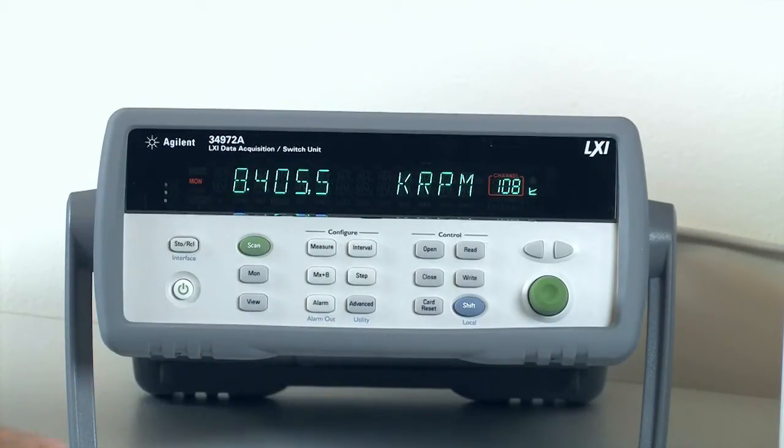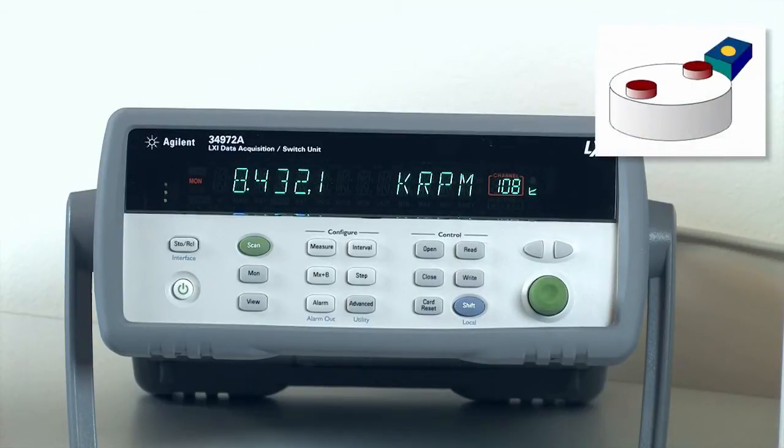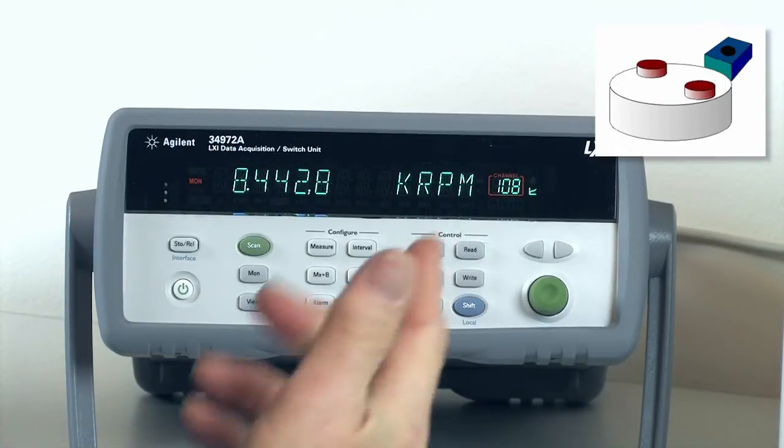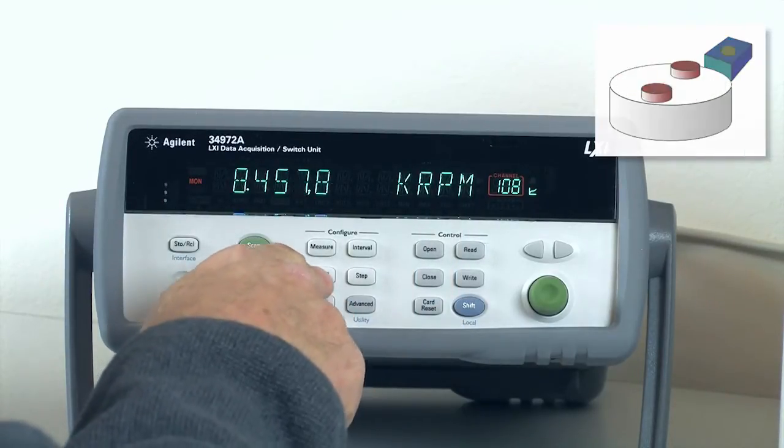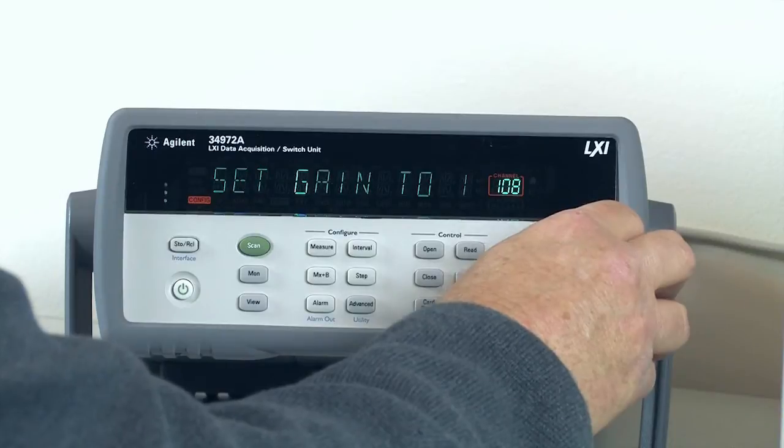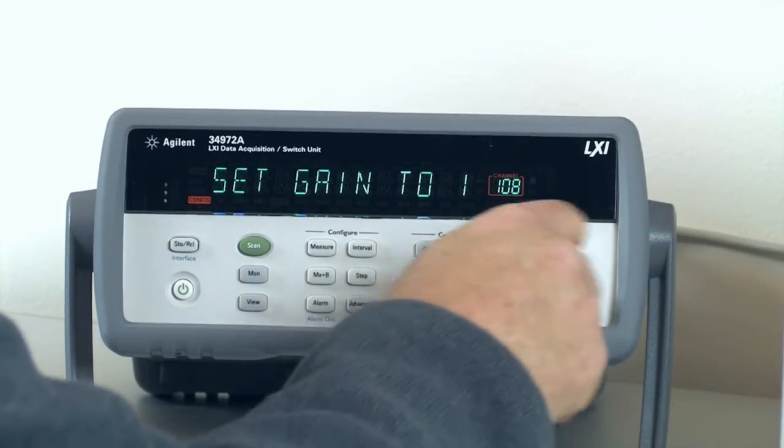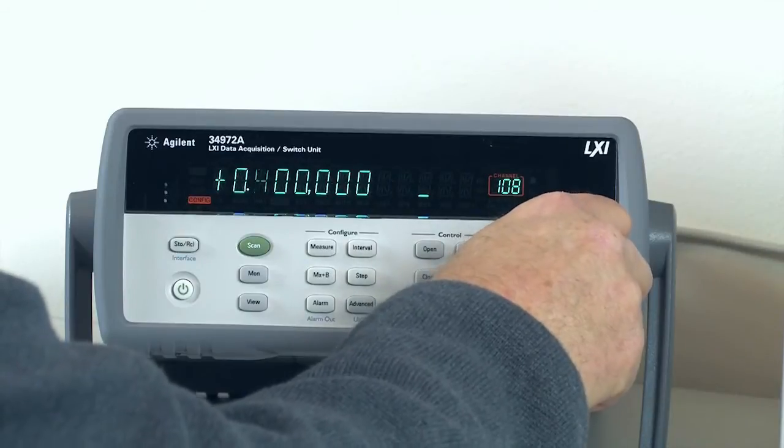So now it's measuring and it says it's 8400 RPM. Well, that's great, except the motor's actually supposed to be running at about 4200 RPM, according to the spec sheet. So it's going twice as fast. Well, what that makes me realize is that actually it puts out two pulses for every rotation of the fan. So what I need to do is go back and change my gain. I'm going to set the gain again.